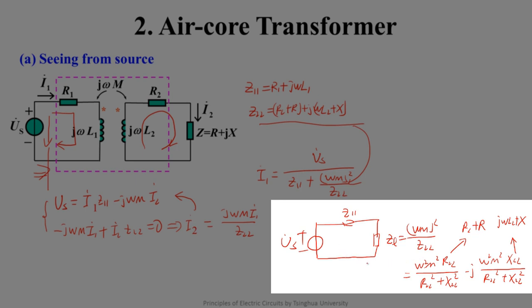Through such an equivalent circuit, we find that the transformer realizes the transmission of power — part of the active power from the primary side is consumed on the real part of the reflected impedance, which includes the real part of the load. So through the transformer, an electrically isolated device, power is transmitted from the primary side to the secondary side. We must also note the minus sign: the reflected impedance changes the reactance properties. If the secondary side is inductive, it appears capacitive from the primary side, and vice versa. This means we can use the air core transformer for impedance matching to achieve maximum power transfer.